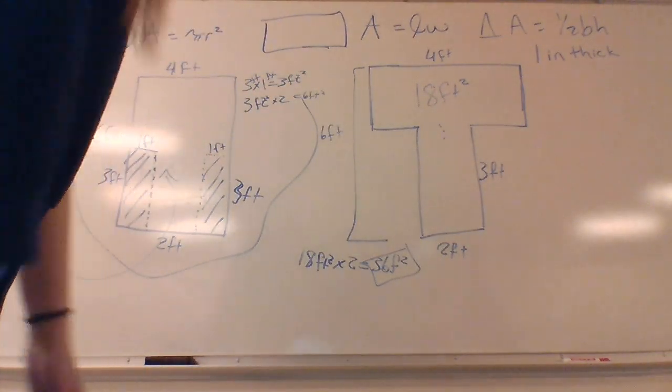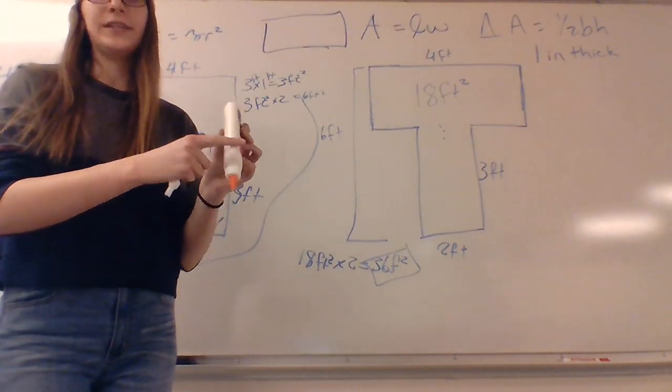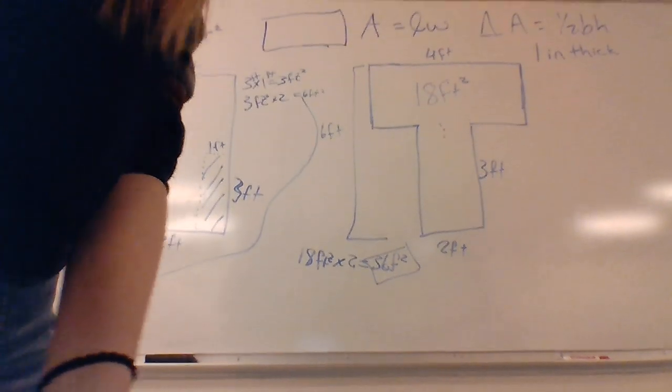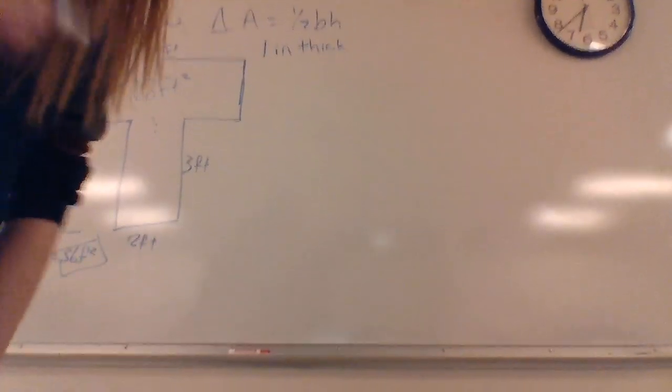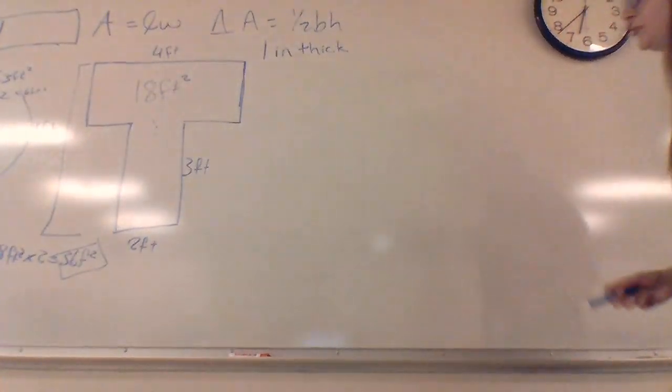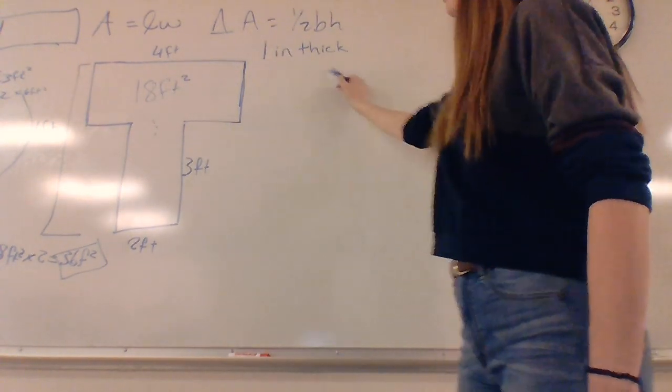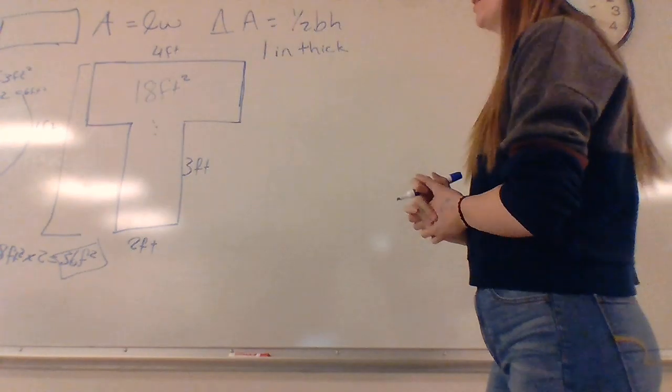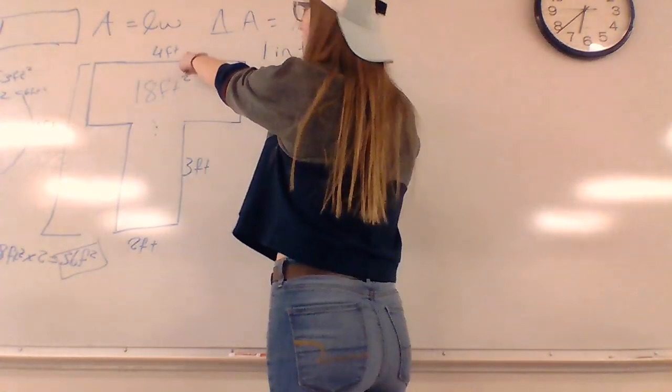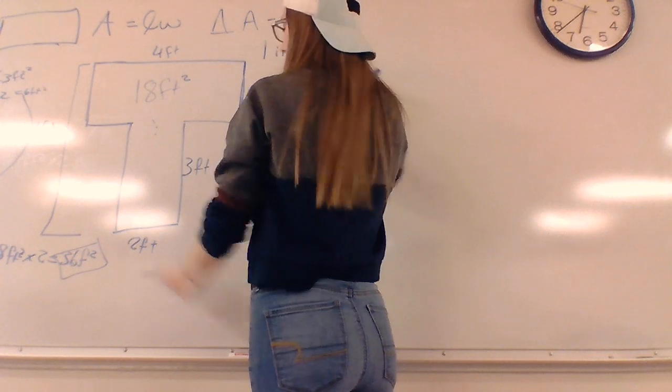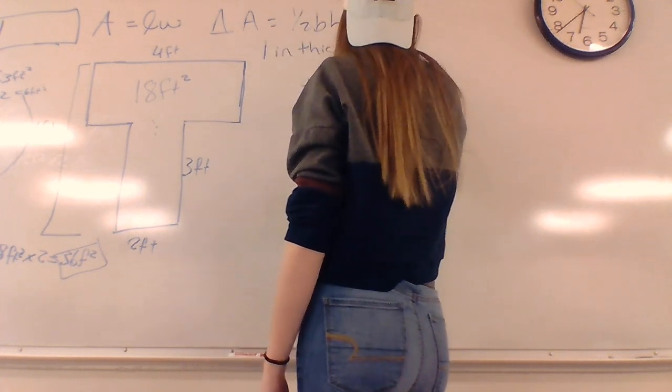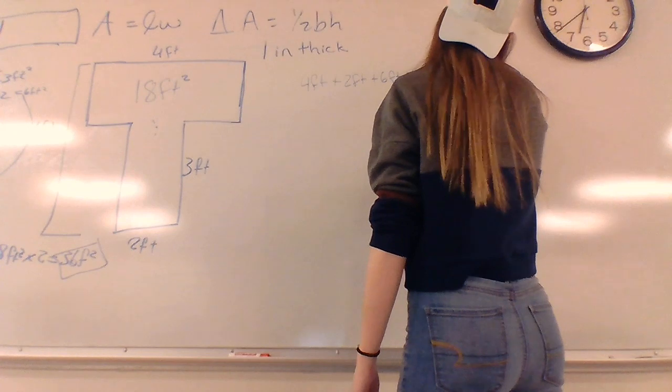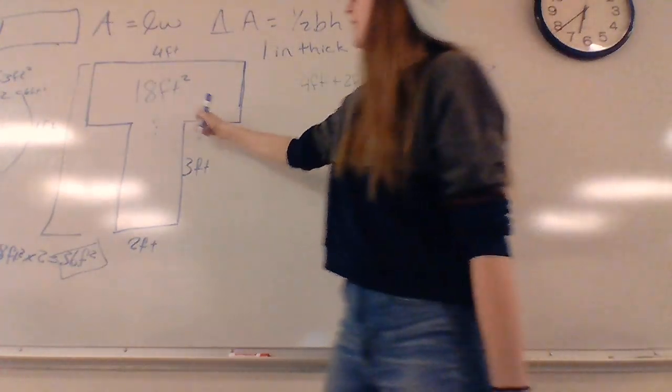Now, since surface area also accounts for the pieces that hold this together, because it is a 3D object so it has a thickness, we are going to come to this side of the board. We are making the assumption that the thickness of the kite is one inch thick. And so we need to find the perimeter of the whole kite. To do so, we are going to add all sides. We have 4 feet plus 2 feet plus 6 feet plus 6 feet plus 3 feet plus 3 feet. And we decided that these are each 1 foot.